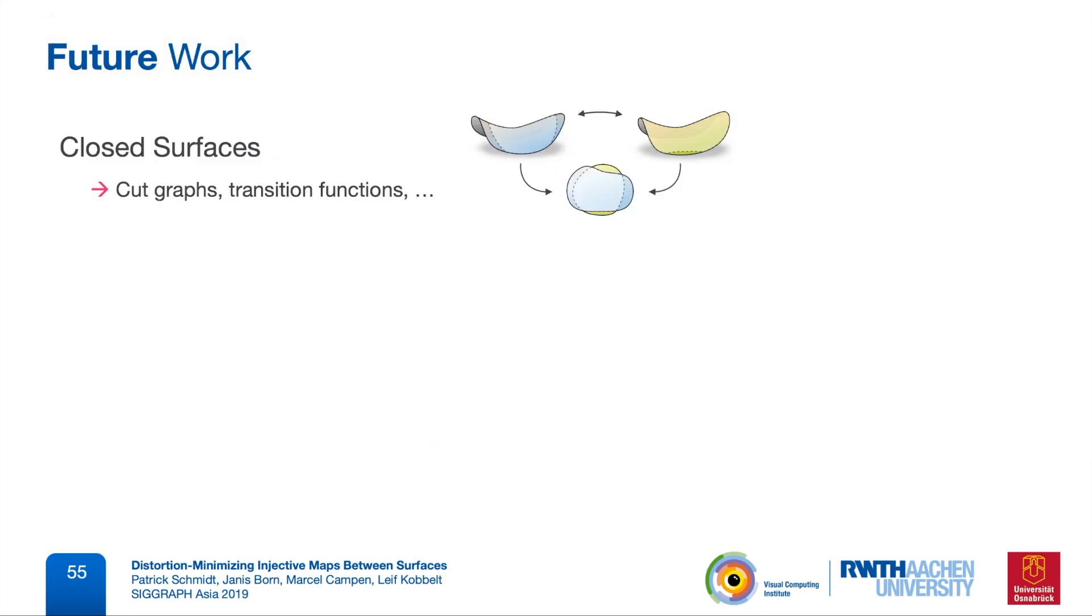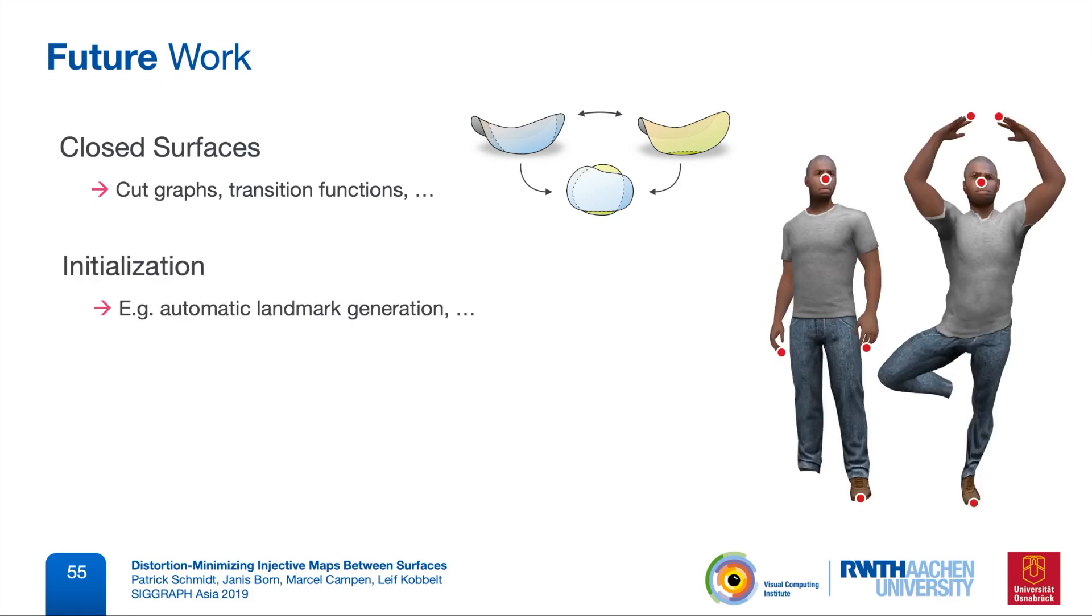The most obvious next step would be to extend the algorithm to closed surfaces. However, handling cut graphs and transition functions in this setting is going to be a challenge. Further, we are now able to run into a local optimum of this non-convex problem and we rely on a few landmark correspondences for initialization. So finding good optima automatically would be very interesting.